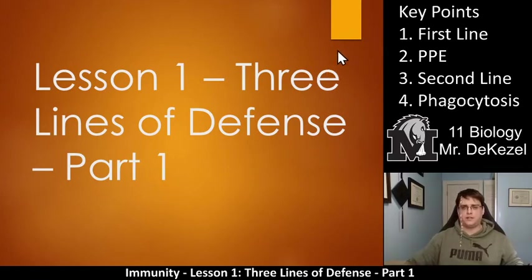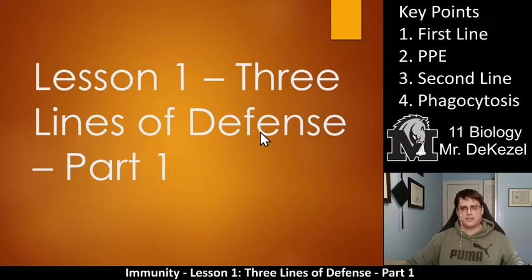Key point one is the first line. Key point three is the second line. In between, we have PPE — personal protective equipment — and key point four is phagocytosis. So let's get into it.